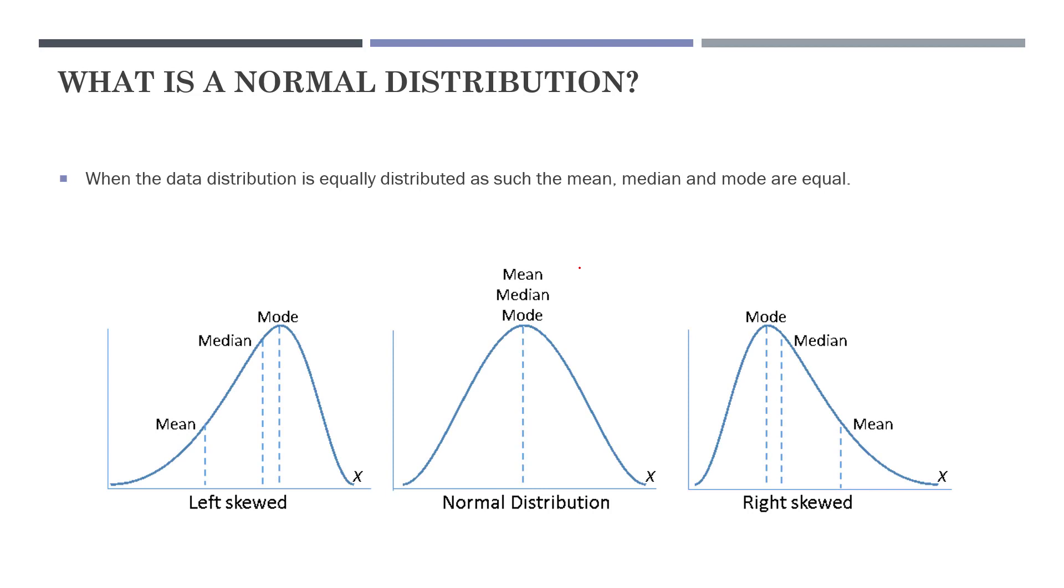The fifth question is: What is a normal distribution? A normal distribution, also known as Gaussian distribution, is a probability distribution that is symmetric about the mean, where the mean, median, and mode are equal. This is the five set of questions. I'll be taking five more questions in the next video. Thank you so much for watching this video. Bye bye, have a nice day.